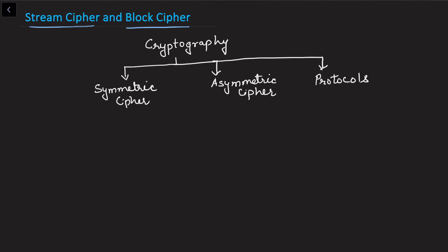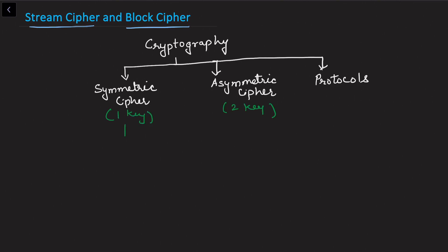In this video we'll be learning about stream cipher and block cipher. In cryptography, we have studied symmetric ciphers and asymmetric ciphers. In symmetric cipher we use one key and in asymmetric cipher we use two keys. Symmetric cipher is further divided into stream cipher and block cipher — two categories that use one key.